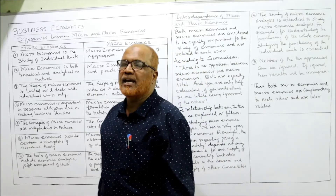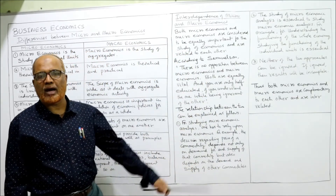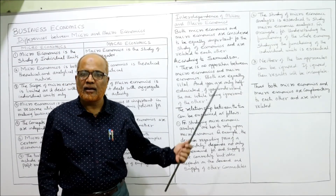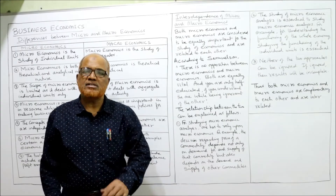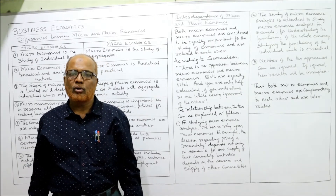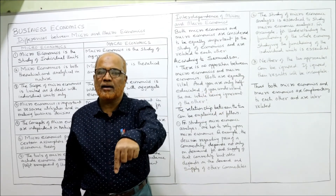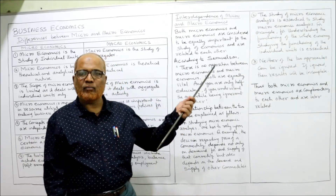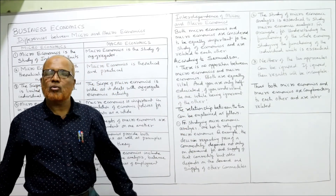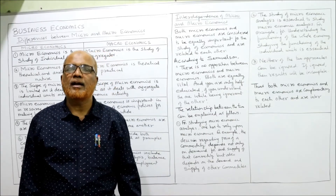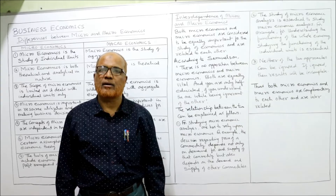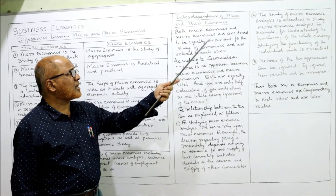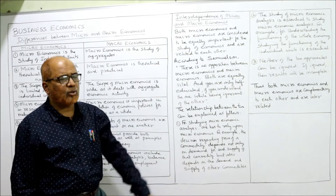The next topic is the interdependence of micro and macroeconomics. Can we study only micro ignoring macro, or only macro ignoring micro? Are they independent or dependent on one another? Both microeconomics and macroeconomics are considered equally important for the study of economics and are related to each other. Both studies are very important, and to study complete economics you must have knowledge of both micro and macro.